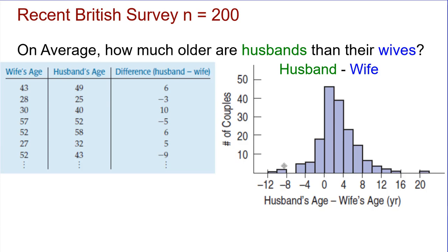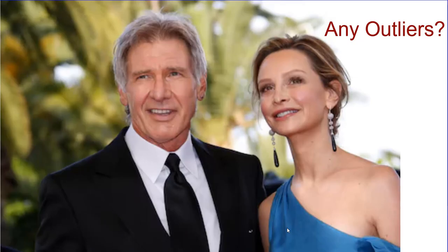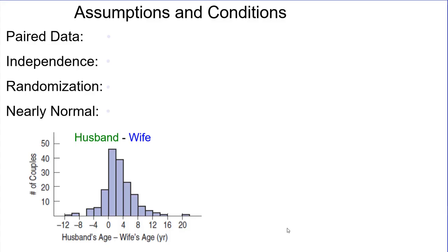There were also some cases where the wife was anywhere from 8 to 12 years older. There are quite a few in that group too. I couldn't not have fun with this — so there were three outliers there. Anyway, on to assumptions and conditions.